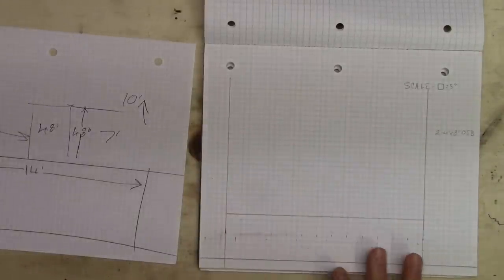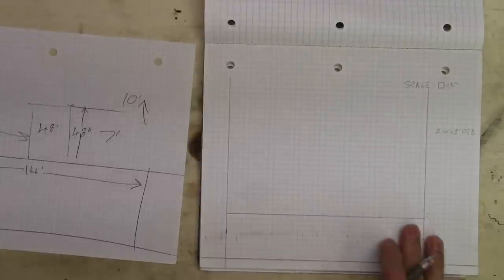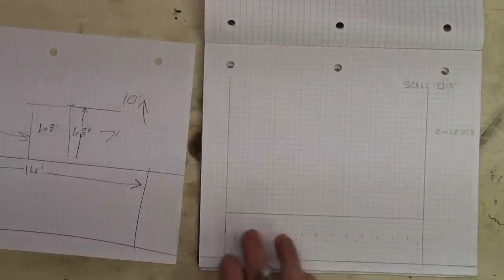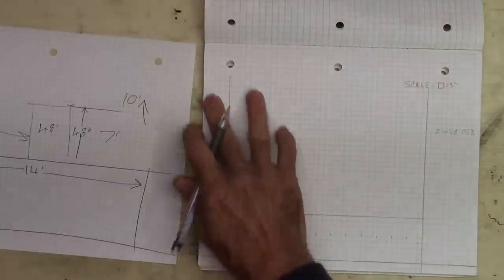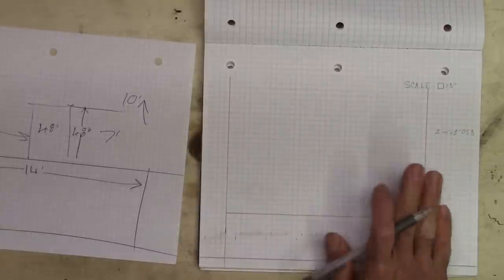Now, we're going to make this out of two by fours. All of the framework for the bench. And we're going to get started on the bench first. And then we'll worry about planning out all the shelves and all that later.